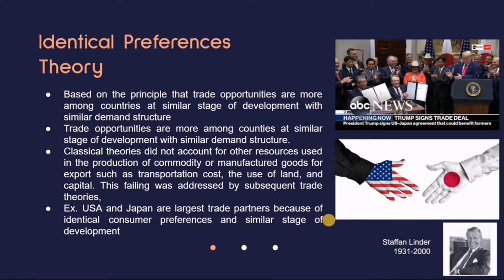Next we have the identical preferences theory, based on the principle that trade opportunities are more among countries at a similar stage of development with a similar demand structure. The example here is Japan and America. Classical theories did not account for other resources used in production of goods for export, such as transportation cost, land, and capital — and this failing was addressed by subsequent trade theories.